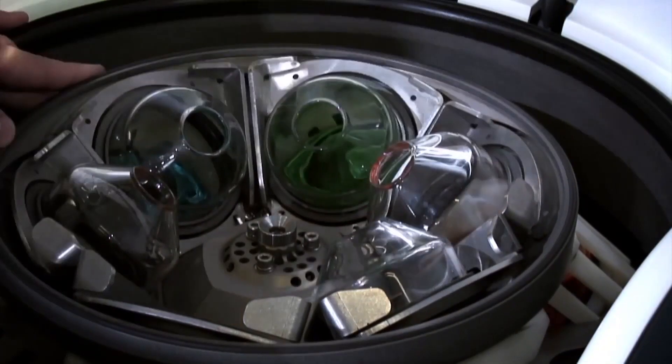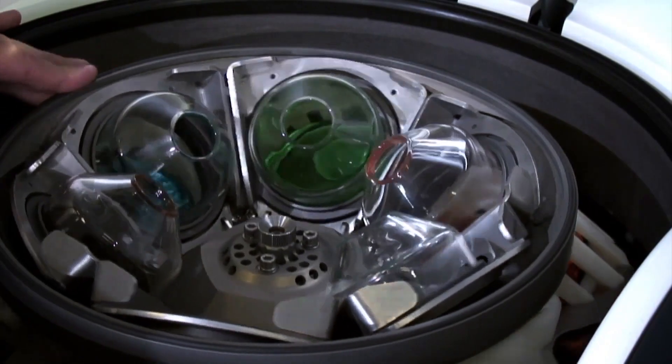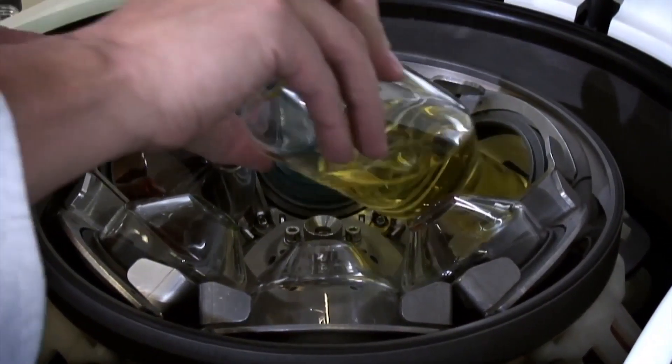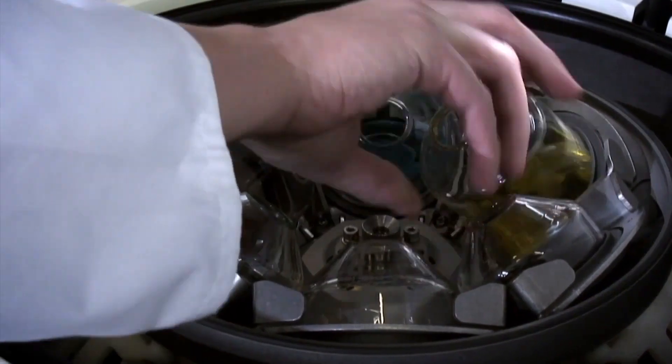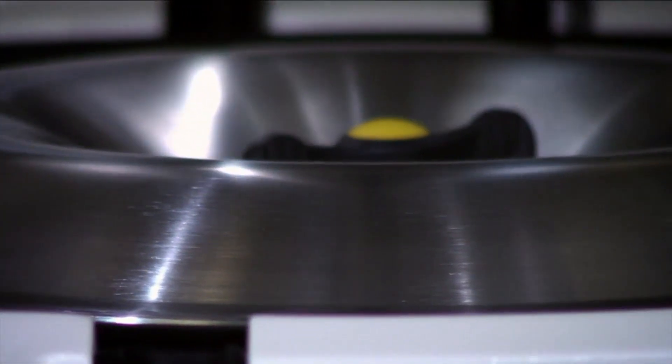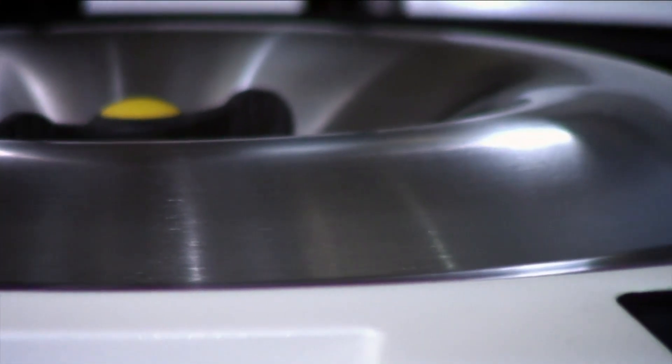When fitted with a removable six-position flask rotor, the rocket synergy will accept up to six flasks with a working volume of 400 millilitres or up to 18 ASE tubes with options to optimize sample transfer.